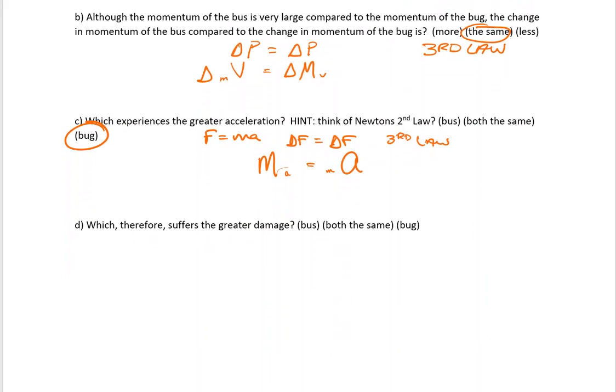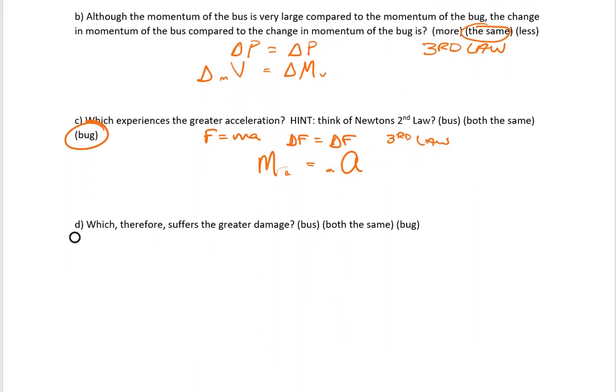Last question here for today. Which therefore suffers the greater damage? We know this has to be the bug. The bug is ended, put out of its misery. The bus, if you go to the car wash, you can wash the bug right off the windshield. So this one's fairly easy for you to understand. The bug has the greater damage. I hope that was informational for you guys. I'll catch you on the flip side.